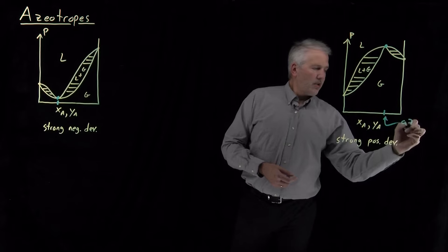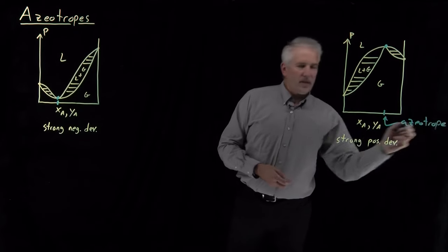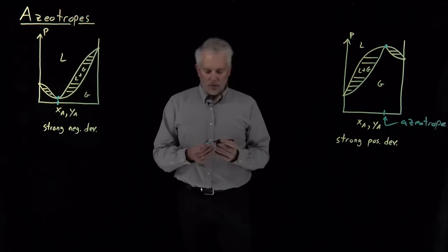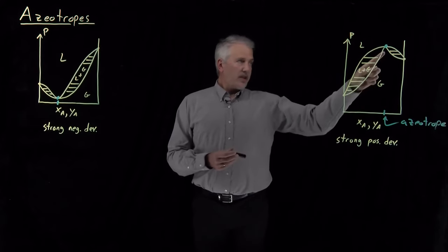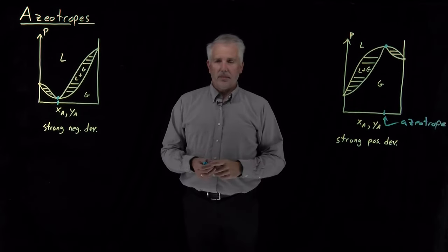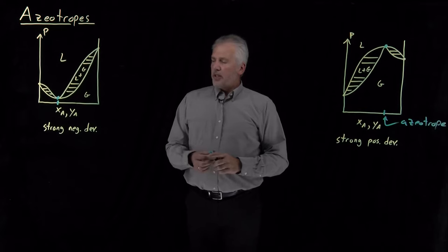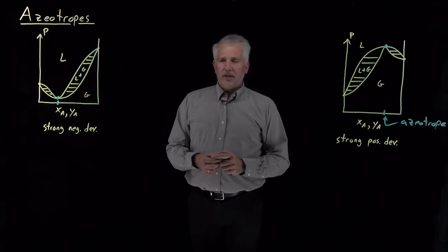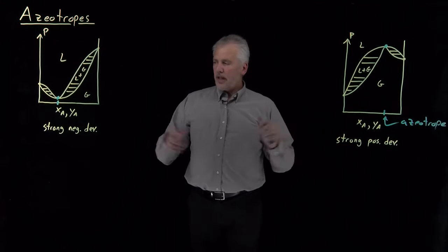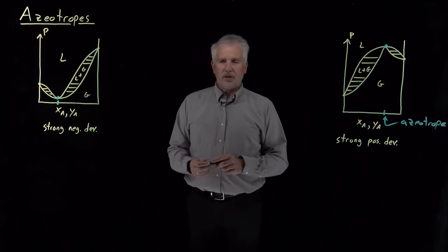An azeotrope is a mixture with a concentration such that the phase diagram looks like this above that concentration. It's more useful to talk about these phase diagrams not in terms of pressure and composition, but in terms of temperature and composition.